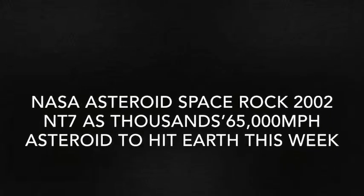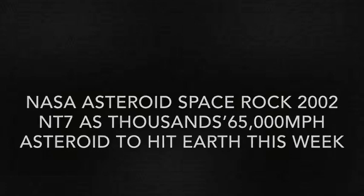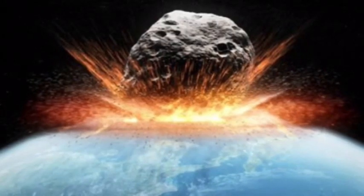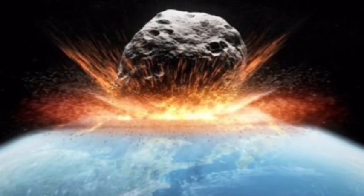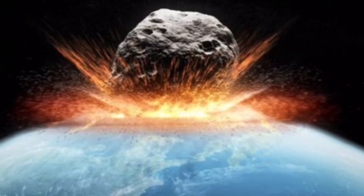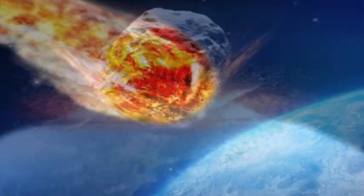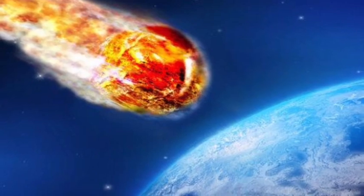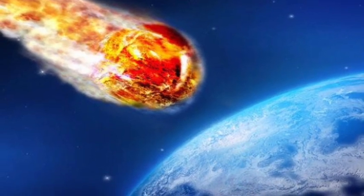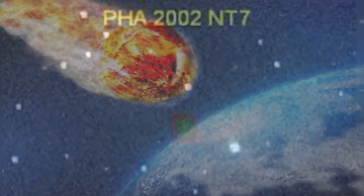NASA cover-up frenzy as thousands fear 65,000 MPH asteroid to hit Earth this week. NASA has been accused of trying to cover up a 65,000 mile per hour asteroid that is due to come crashing into Earth on Friday. At least that is the claim from conspiracy theorists who have flooded the internet with warnings about the space rock 2002 NT7.